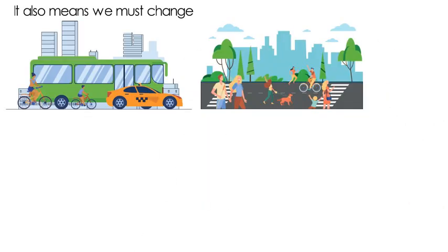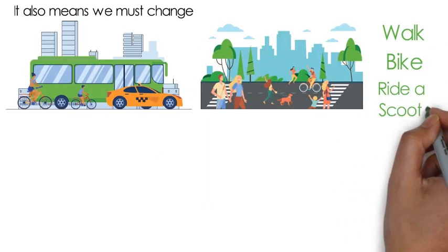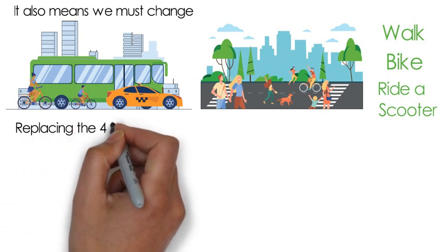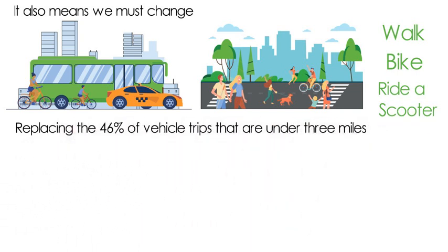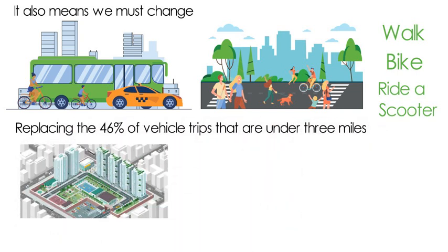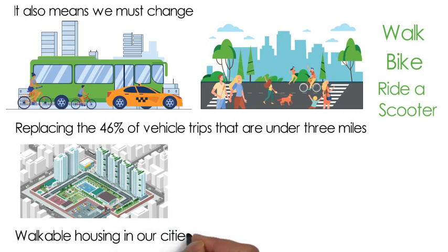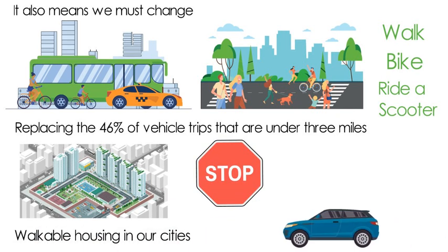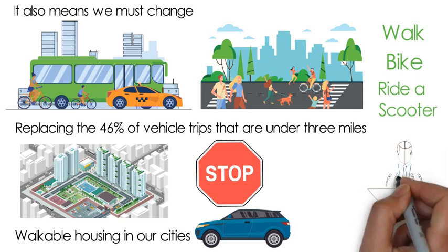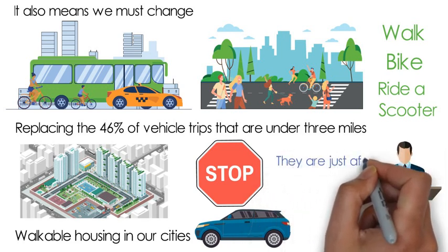It also means we must change how our cities work, enabling people to walk, bike, or ride a scooter for transport and replacing the 46% of vehicle trips that are under three miles. To do this, we need to build dense, walkable housing in our cities and stop thinking about movement in a car-centric way. Anyone saying differently? They're just afraid of telling you the truth.